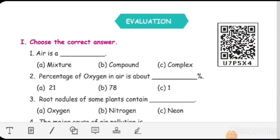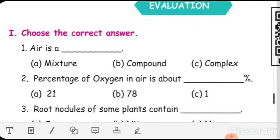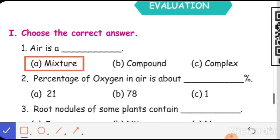Evaluation. First we have choose the correct answer. Number 1, at the left, first question, air is a dash. So we all know that air is a mixture, isn't it? A mixture of gases. So what is the first answer? Air is a mixture.